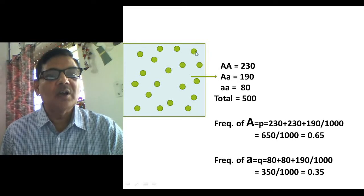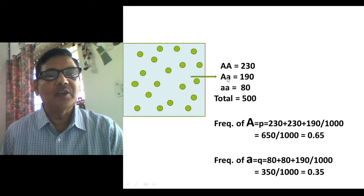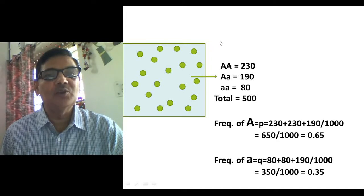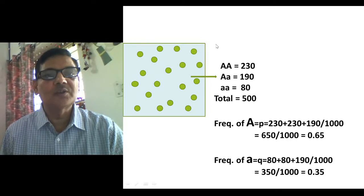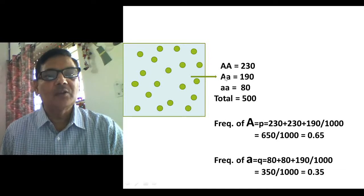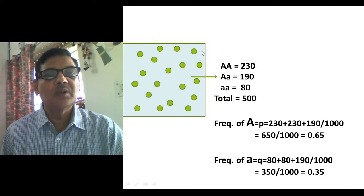These individuals are of three different types with respect to their genotype: capital AA, capital A small a, and small a small a. If you consider the genotype of an individual for a single gene locus, that locus may be represented by two alleles — capital A and small a. Due to the presence of two alleles, three different types of individuals are possible. The homozygous dominant AA number is 230, heterozygotes are 190, and homozygous recessive aa are 80.